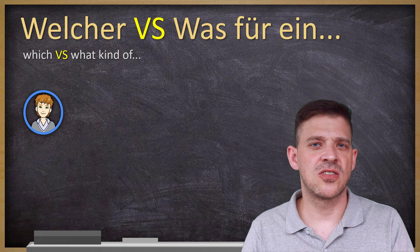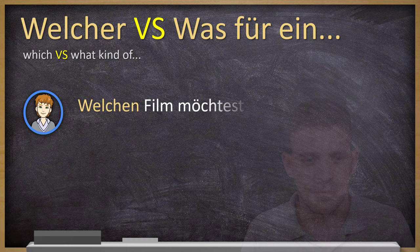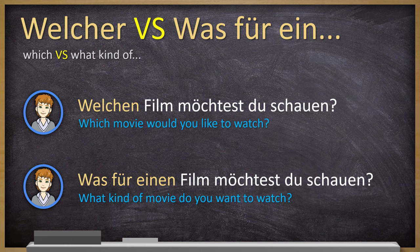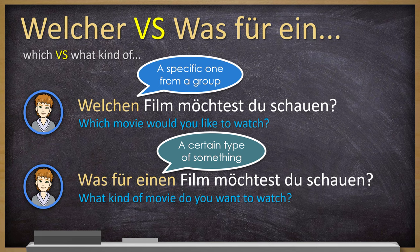Bonus tip two: welch vs. was für ein. You probably know was für ein — it's a common and useful question meaning 'what kind of.' Welchen Film möchtest du schauen? — Which movie would you like to see? You can also say Was für einen Film möchtest du schauen? — What kind of movie do you want to watch? The small difference: welch asks for a specific thing from a group, while was für ein asks for a certain type or category — for example, documentary or comedy.